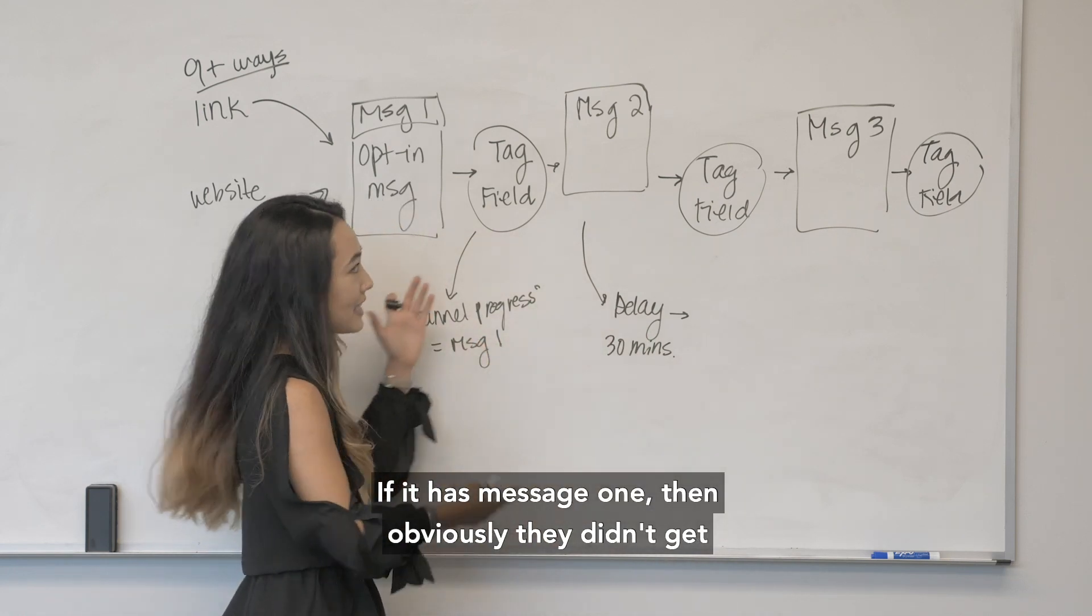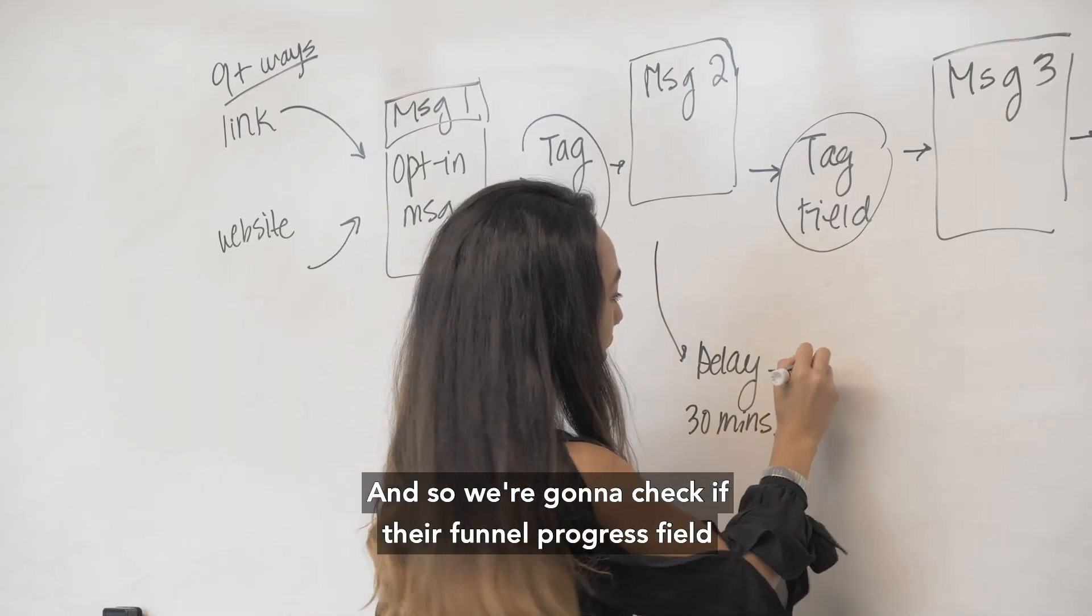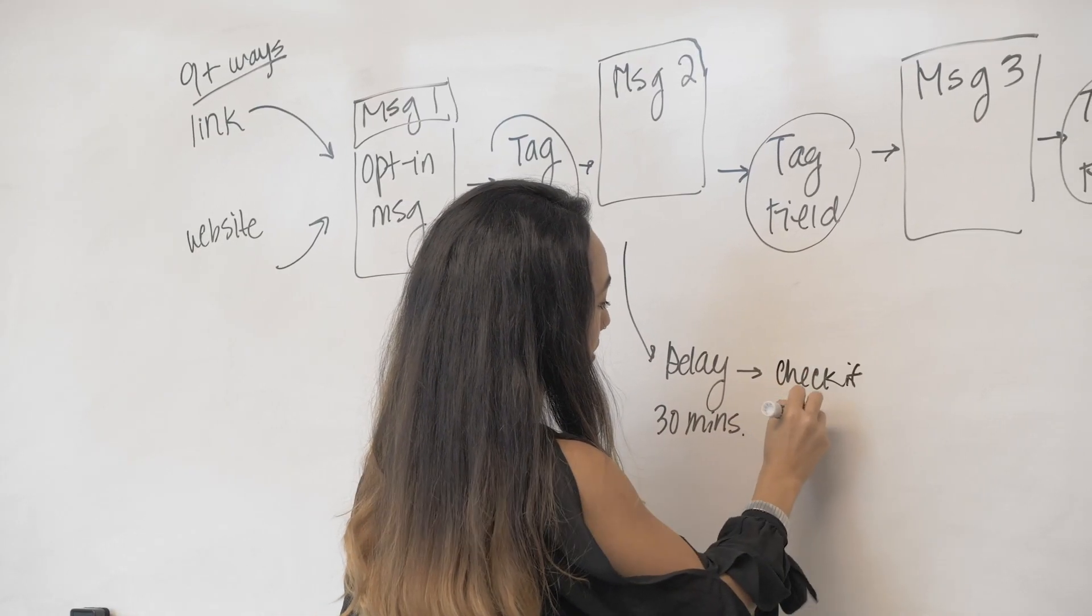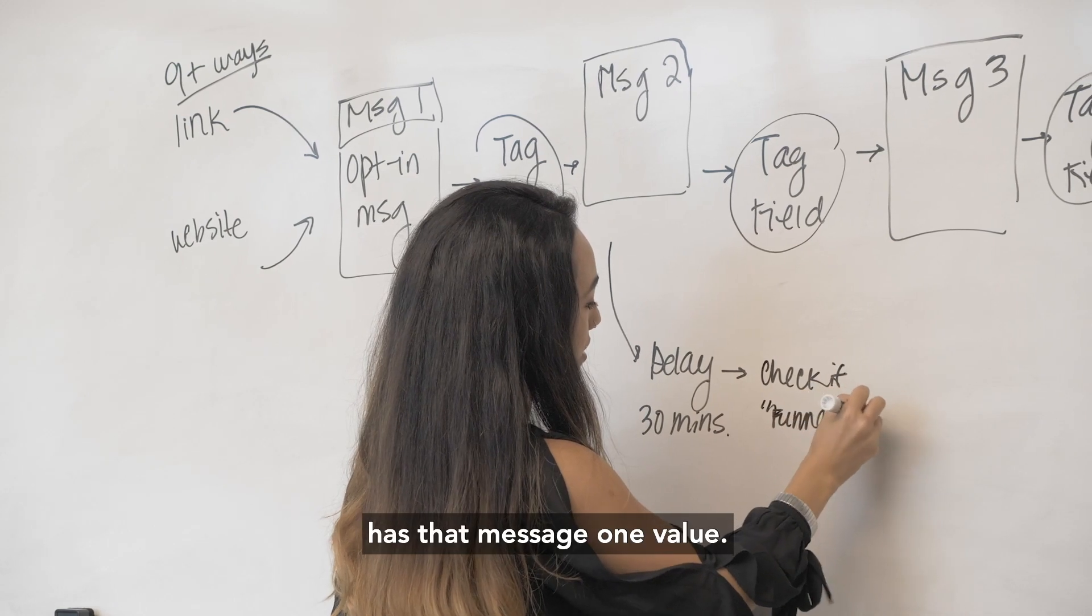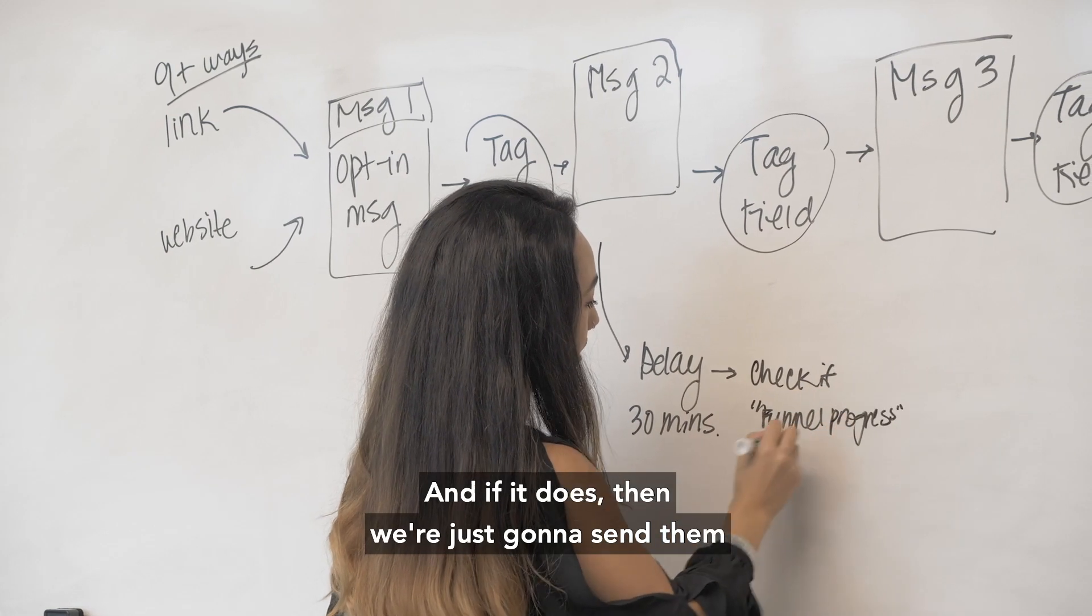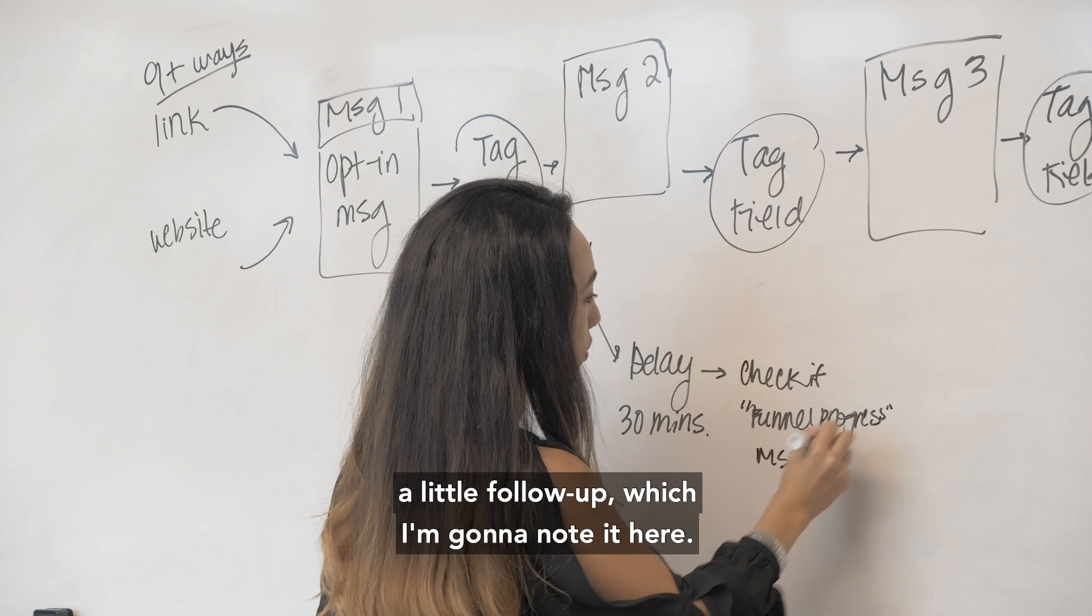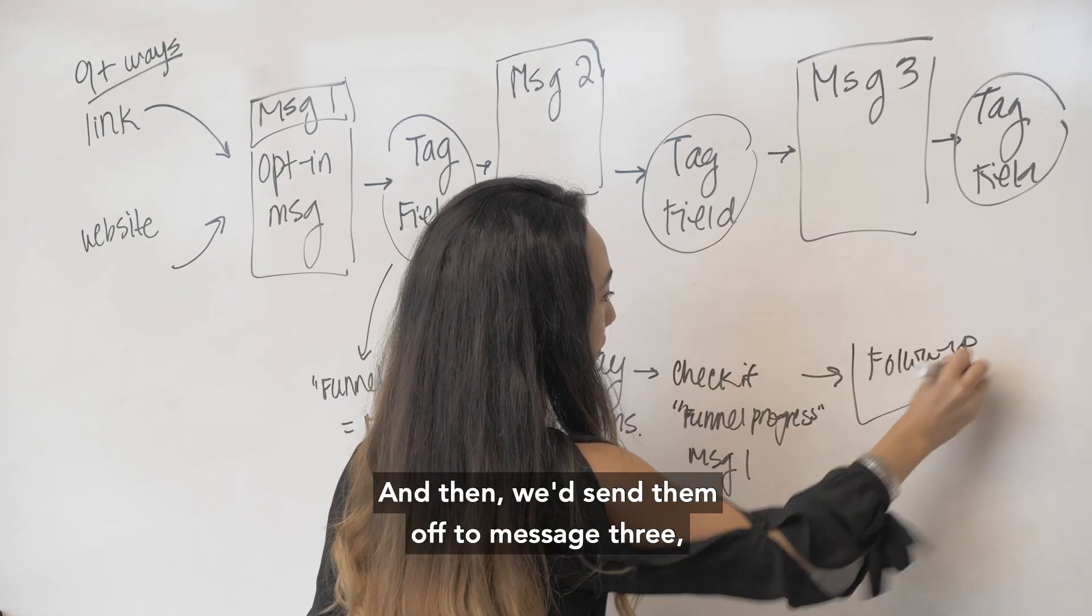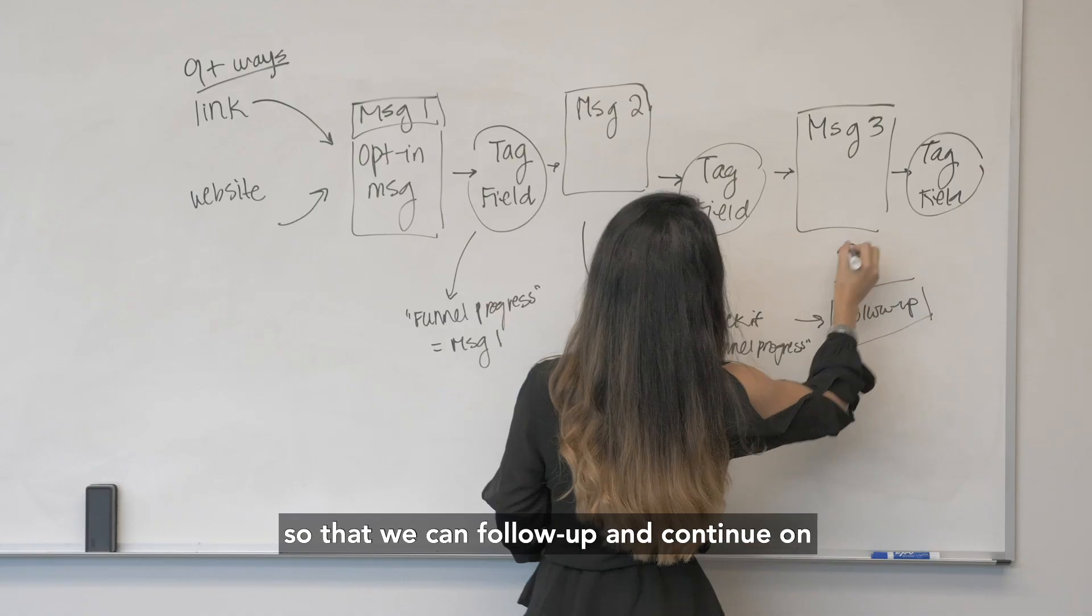So we're going to check if their funnel progress field has that message one value and if it does then we're just going to send them a little follow-up, and then we'd send them off to message three so that we can follow up and continue on with the last part of the message.